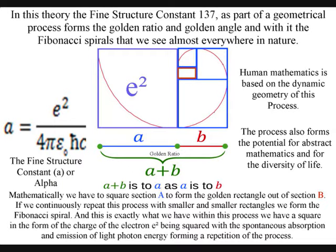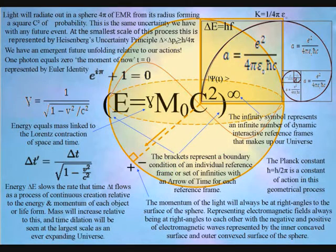Therefore, it is logical that any process that forms the Fibonacci spiral in nature and throughout the universe would have to be divided into two parts, and also there would have to be a geometrical reason for this process to be squared.